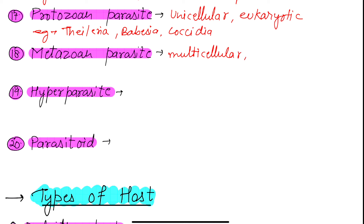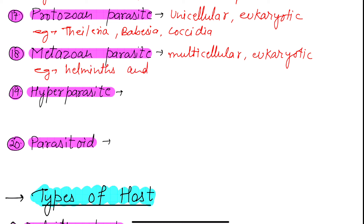Next we have the metazoan parasite. Metazoan parasites are multicellular and also eukaryotic. The examples of metazoan parasites are helminths and arthropods.